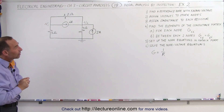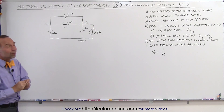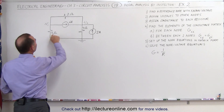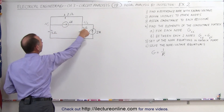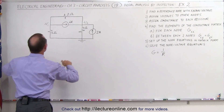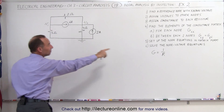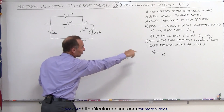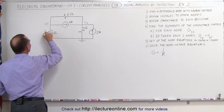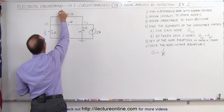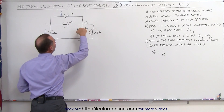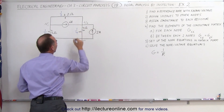We assign conductances to each of the resistors. We have three resistors. G is the inverse of R, so the conductance here would be 1 over 5, the conductance there would be 1 over 2, and the conductance here would be 1 over 4.